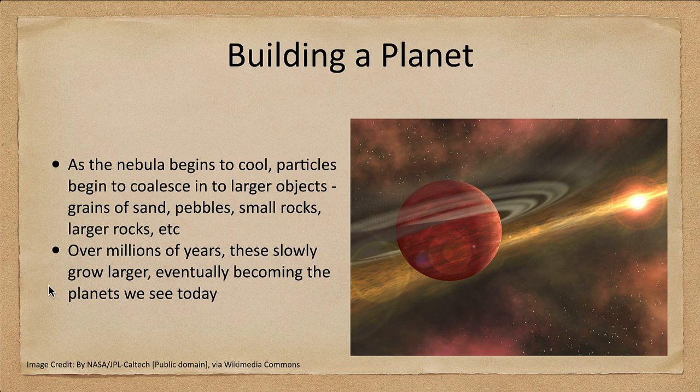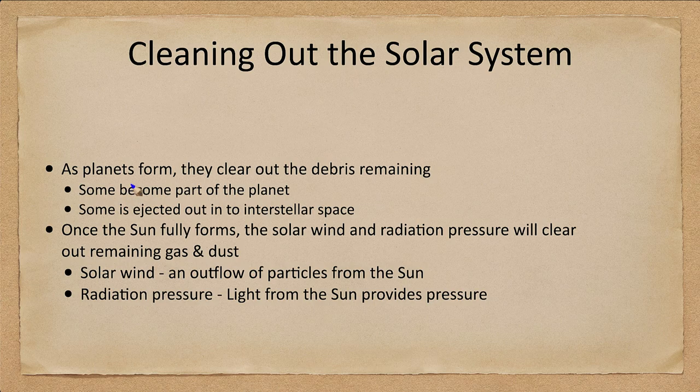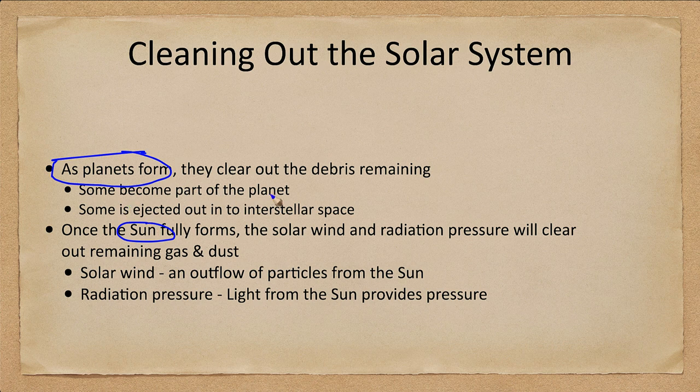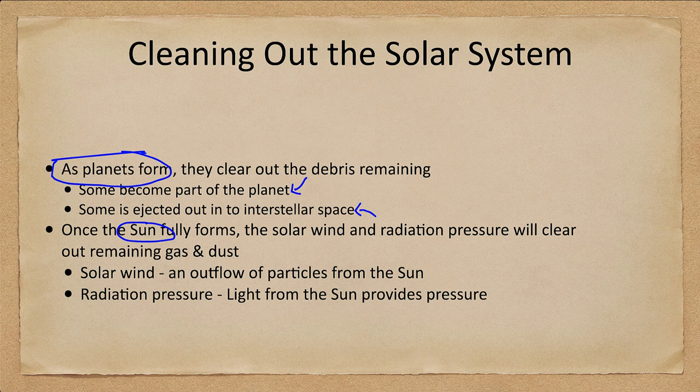How do we get rid of that extra debris? This is the job of the planets and the Sun. The planets clean out the debris in their areas. Some of that debris becomes part of the planet and some of it is ejected into interstellar space. Debris passed too close to a planet, gained enough energy to escape from the solar system and never to return. That'll clear out some of the debris, at least the larger pieces.